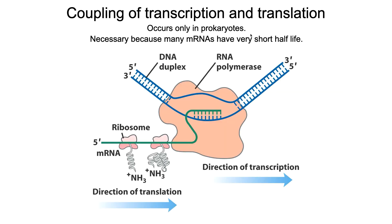In bacteria, because there is no nucleus, transcription and translation happen in the same place — they are coupled. Even before the messenger RNA is done being transcribed, as soon as the five-prime end emerges and a ribosome binding site with an associated start codon appears, a ribosome binds and starts translating. You're already getting protein made before the messenger RNA is fully transcribed, making the process incredibly efficient.